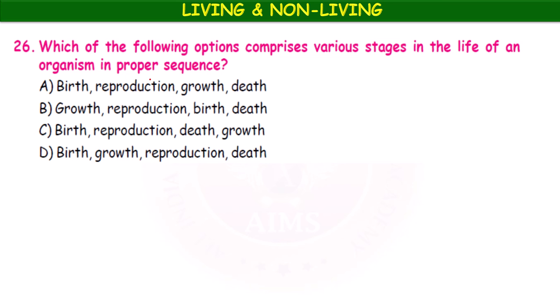Which of the following options represents the various stages in the life of an organism in proper sequence? The correct order is: birth, growth, reproduction, and death. Option D represents the right sequence — first birth, then growth, then reproduction, and finally death.